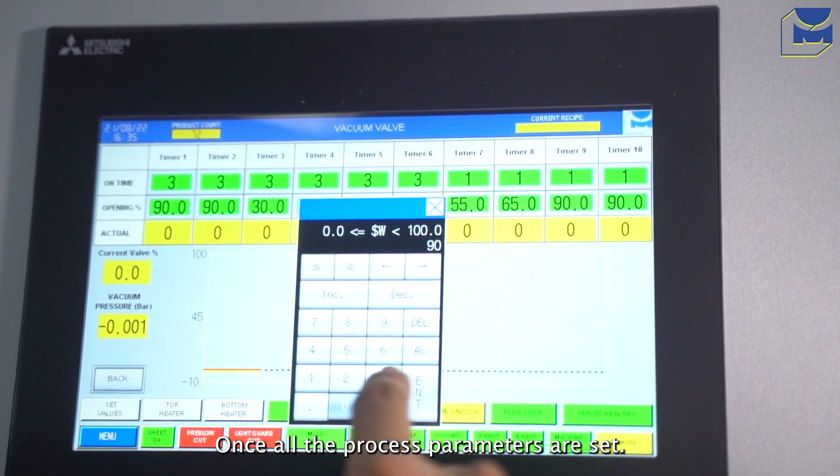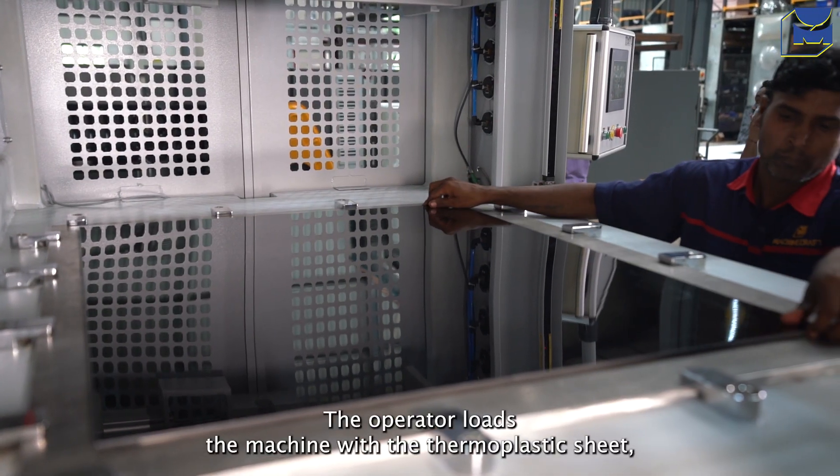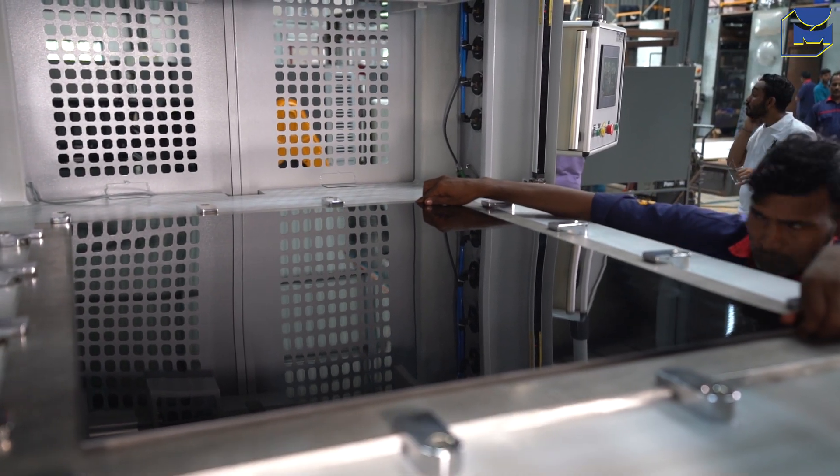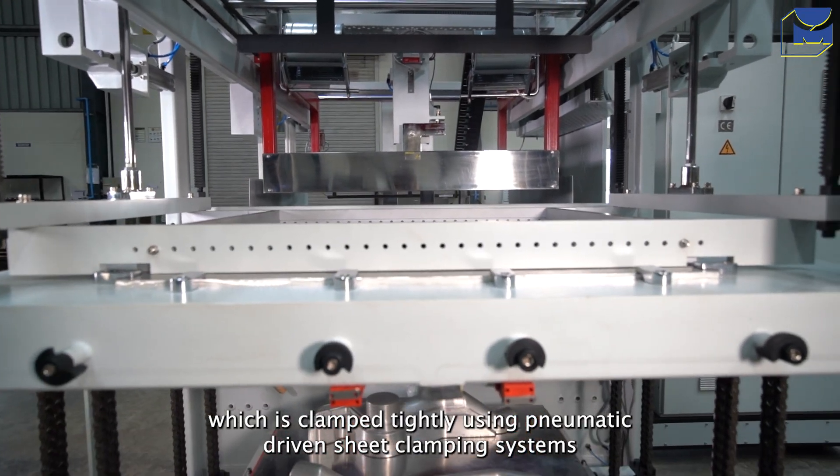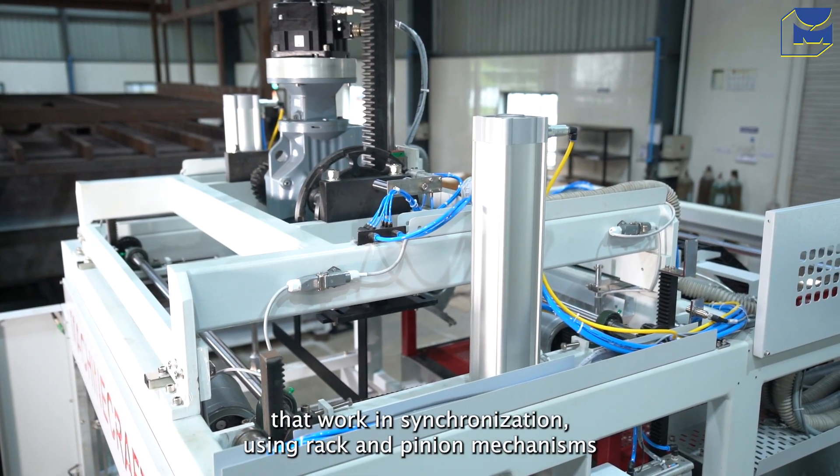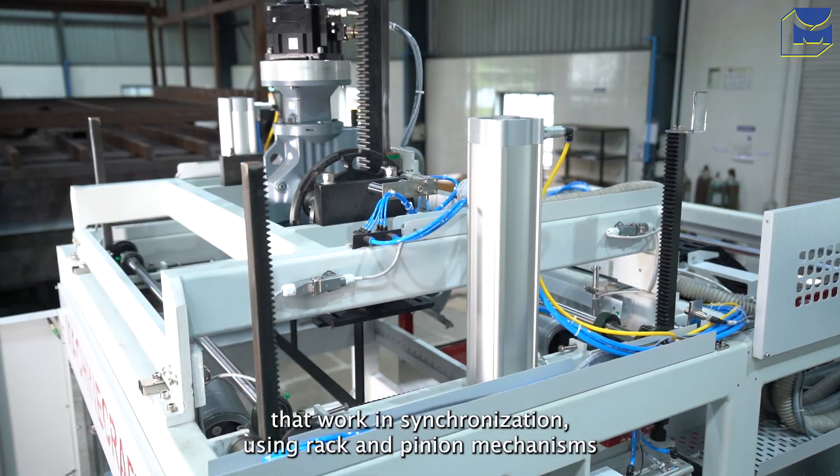Once all the process parameters are set, the operator loads the machine with the thermoplastic sheet, which is clamped tightly using pneumatically driven sheet clamping systems that work in synchronization using rack and pinion mechanisms.